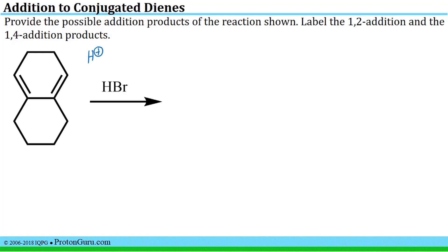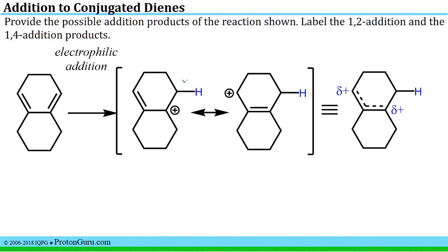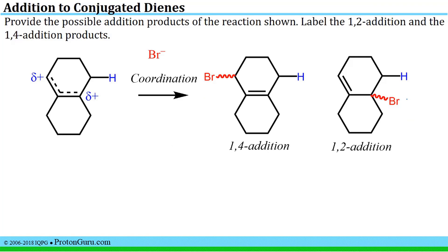The first step will simply be electrophilic addition of the proton. This will lead to the formation of a cation, and this initially formed carbocation has an additional resonance contributor. The resonance hybrid is a good representation of where the positively charged carbons will be. This is important because the next step is the coordination of the bromide anion, which will only be attracted to the carbons that have a positive charge.